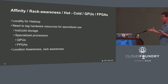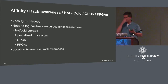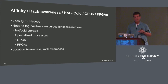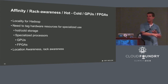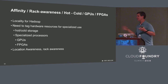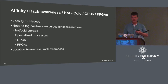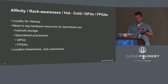Another thing we need is affinity or location awareness. For many workloads, you need to have data and processing close together — Hadoop is a good example. The ability to partition resources so certain workloads get targeted at those resources — hot and cold storage, where you might have petabytes of storage with long access times versus a smaller memory pool with instant access. We need to be able to use our PaaS to specify all these constraints. Same with specialized hardware: GPUs, FPGAs, etc.